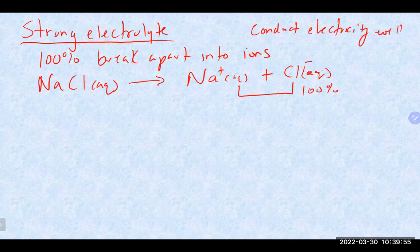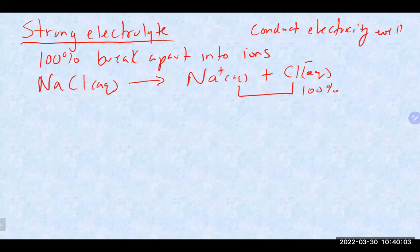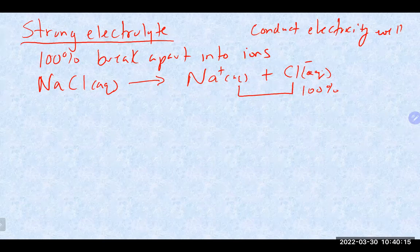There used to be an old experiment where you'd take a light bulb with electrodes hooked up to it and put those electrodes into a strong electrolyte solution — the light bulb would come on and be very, very bright. So strong electrolytes conduct electricity really well, and the textbooks often show a bright light bulb to illustrate that.